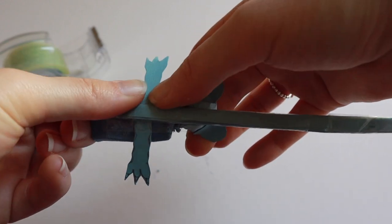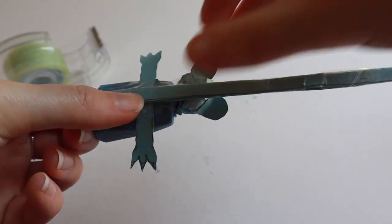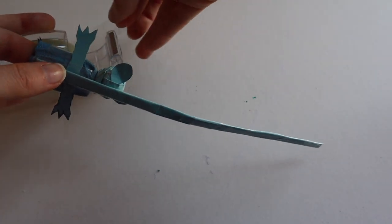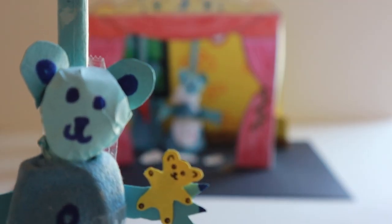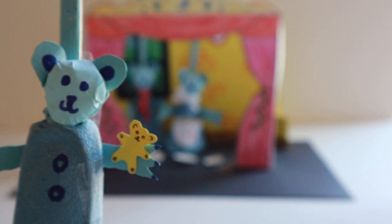One long piece of sellotape downwards and one piece across. And now we have a baby bear to join mummy and daddy bear.